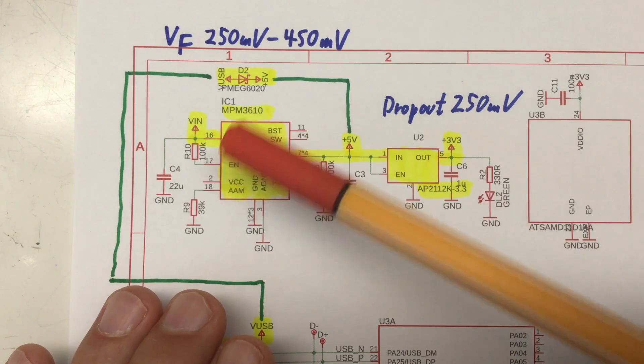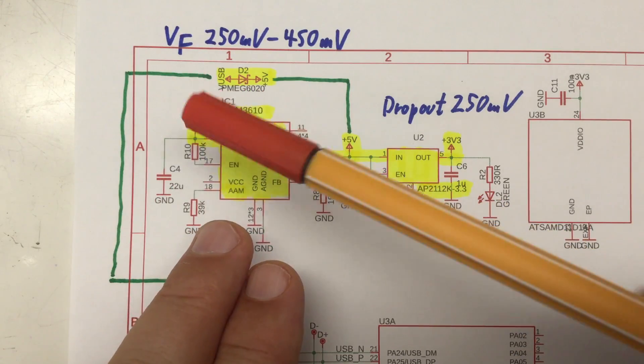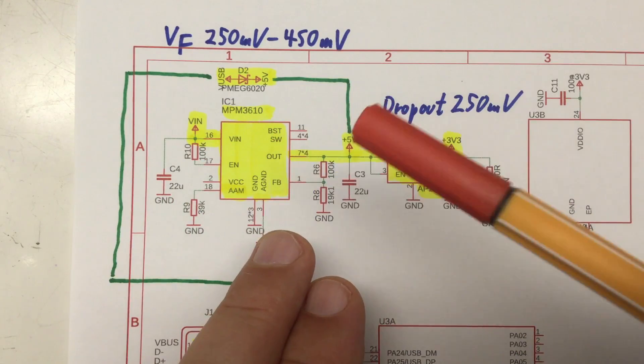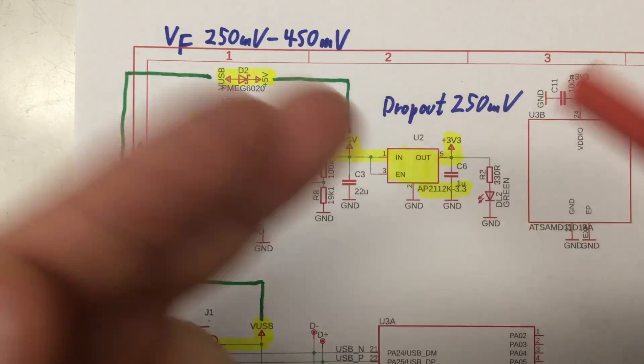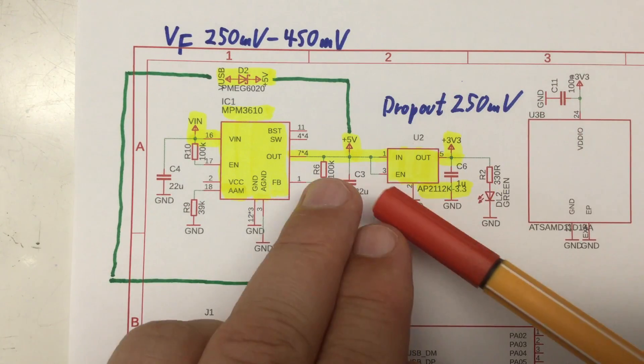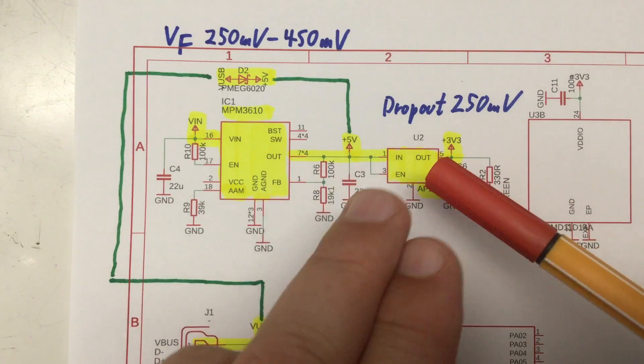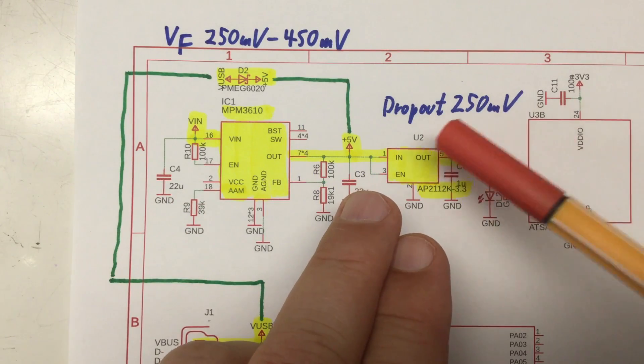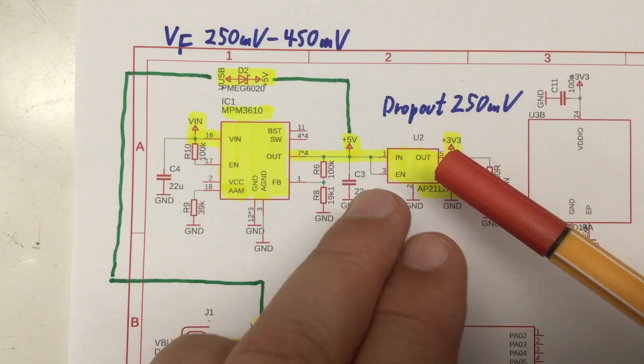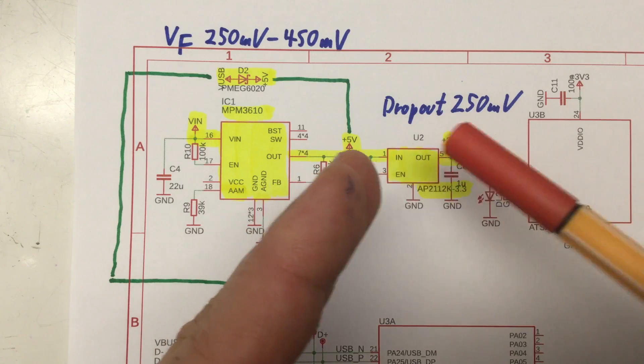Only the V-in pin goes through that switch mode buck converter, and the 7 to 21 volts are converted down to 5 volts for the 5 volt rail. Then the low dropout linear regulator follows here, and that has a usual dropout about 250 millivolts. So as long as you're feeding in 3.55 volts, that should be happy.